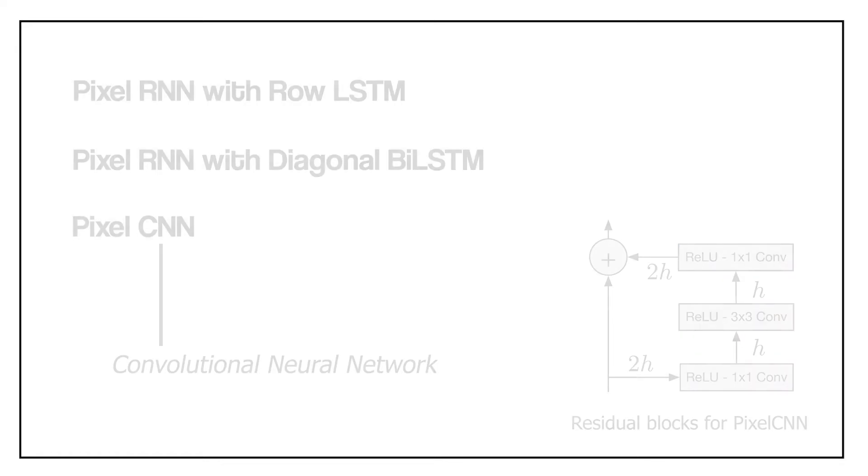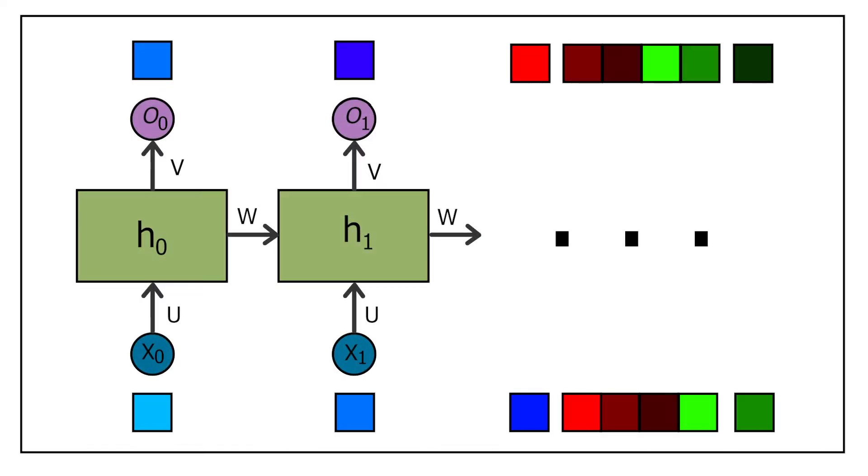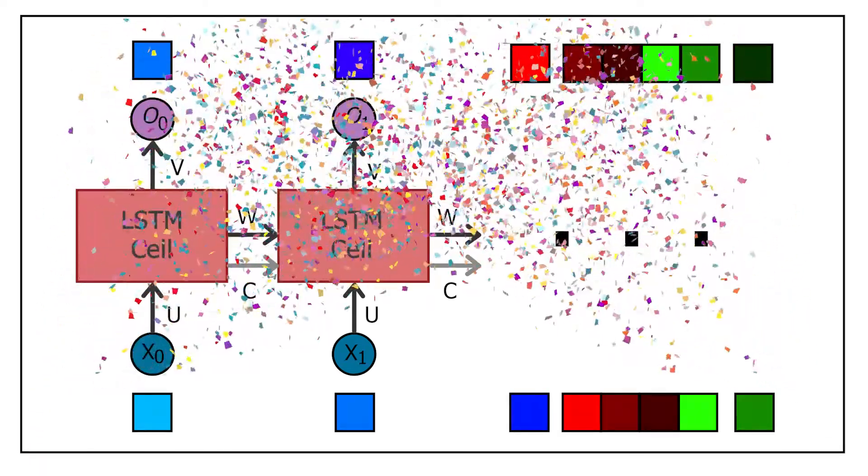Let us go back to our RNN network. In order to implement an LSTM layer, we replace every hidden unit with an LSTM cell and add another connection from one cell to another called the cell state. And that's it, you got yourself an LSTM RNN.